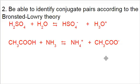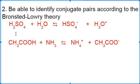Objective two: be able to identify conjugate pairs according to the Bronsted-Lowry theory. This requires that you be able to look at the equation and decide which one's the acid and which one's the base.